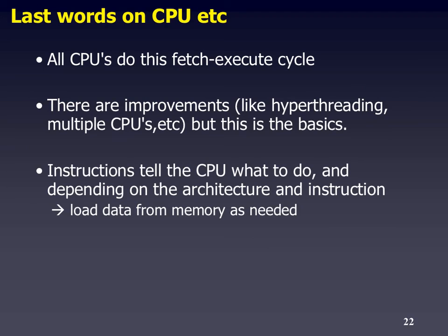All CPUs do these types of cycles, but be aware that's a simplification — there are many more improvements. For example, a concept called hyperthreading, where you execute more than one instruction at the same time, queued up very fast. You might also have multiple CPUs, or what we call multiple cores — like an i5 or i7 processor from Intel. But this is just the basic concept. These instructions tell the computer what to do, and depending on the architecture, they load data and continue on.